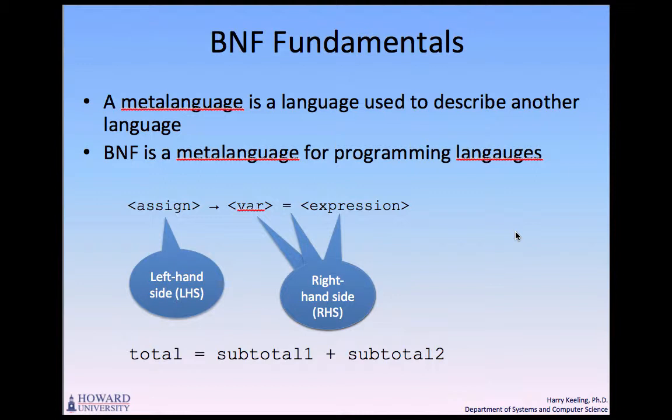The text on the right of the arrow is the definition of the left-hand side. It is called the right-hand side, or RHS, and consists of some mixture of tokens, lexems, and references to other abstractions. Tokens are also abstractions. Although the definition is called a rule, it is also sometimes called a production.